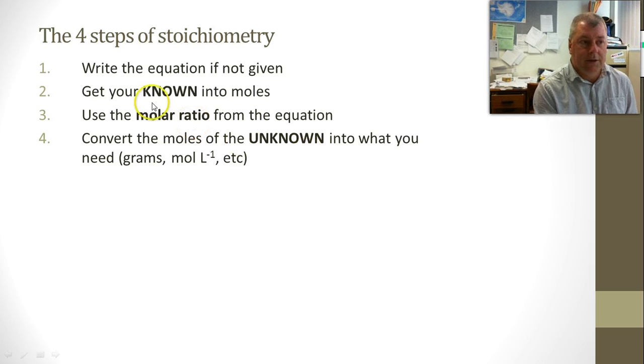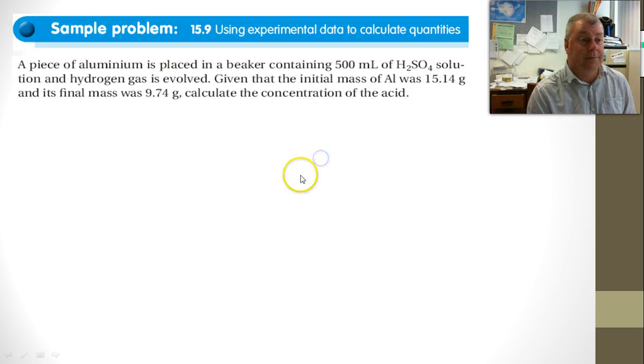Okay? So write the equation, get your known into moles, use the molar ratio from the equation to work out the moles of your unknown, and then convert the moles of the unknown into whatever you need, using the formula that gives it to. Let's have a look at another example.